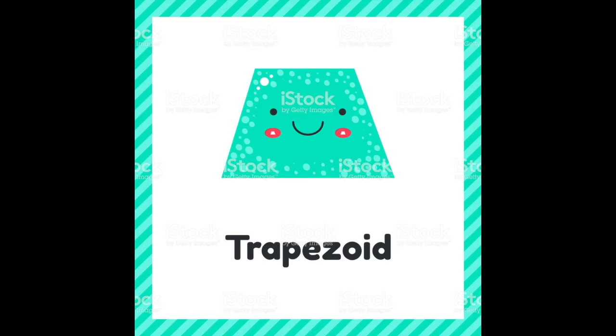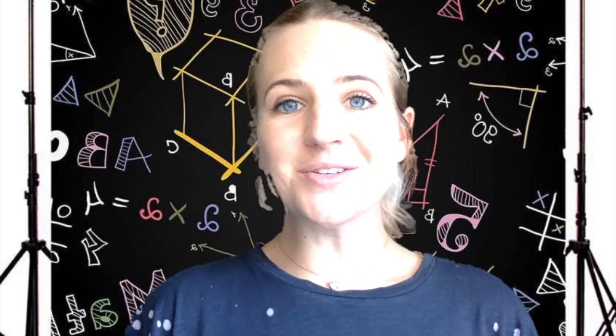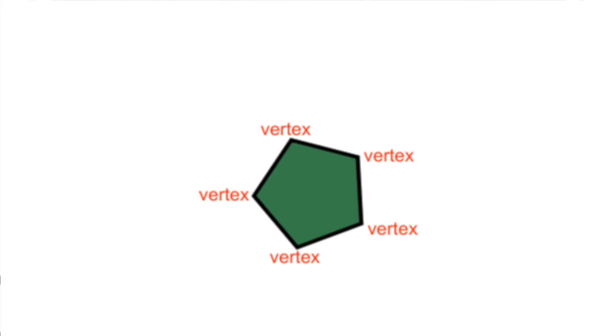Now, what about this triangle? That's right, only one, two, three sides to the triangle. They also have these pointy corners. I wonder what these pointy corners are called. That's right, they're called vertices, or a vertex.